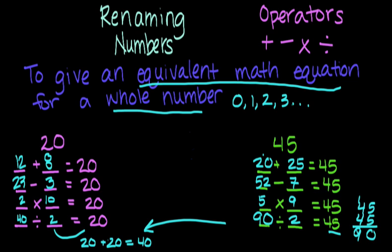Remember when you're renaming numbers, you're finding the equivalent math equation for a whole number. So you need to use the operators to add, subtract, multiply, or divide to figure out what the whole number could be.